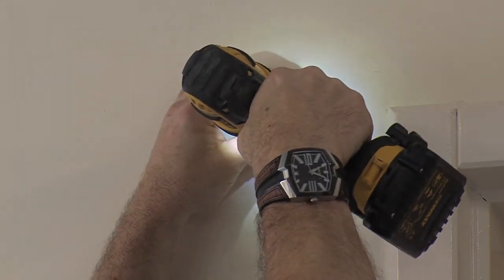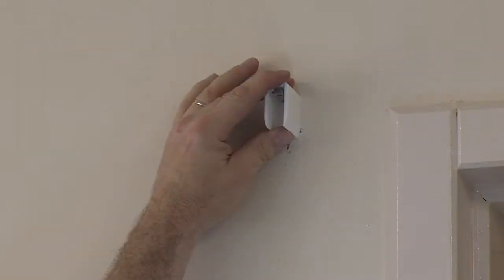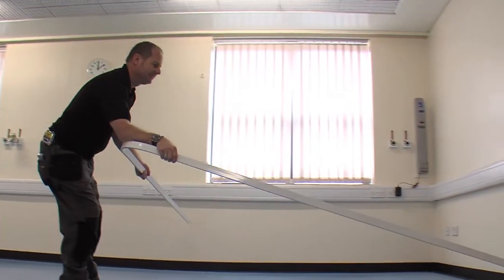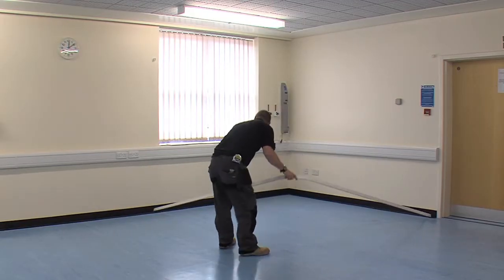Once the brackets are screwed to the wall, firmly of course, it's time to bring in the track, lay it on the floor, and just make sure everything is in the right position.